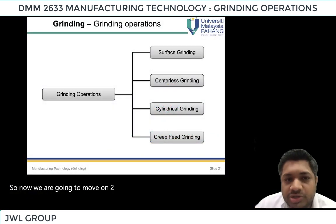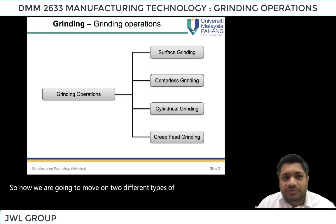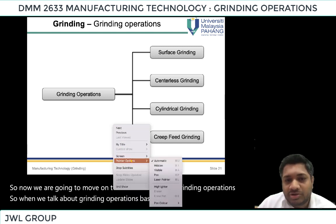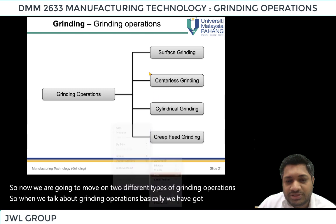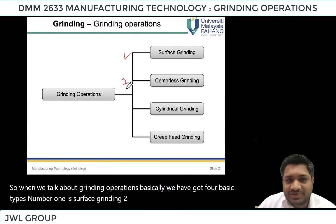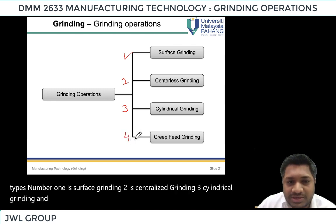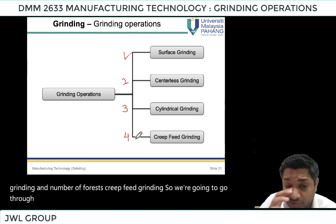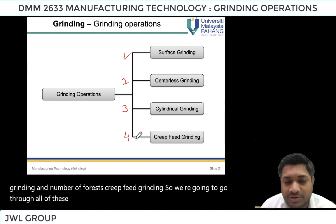Now we are going to move on to different types of grinding operations. We have four basic types: number one is surface grinding, number two is centerless grinding, number three is cylindrical grinding, and number four is creep feed grinding. We are going to go through all of these four and see what the difference is between them.